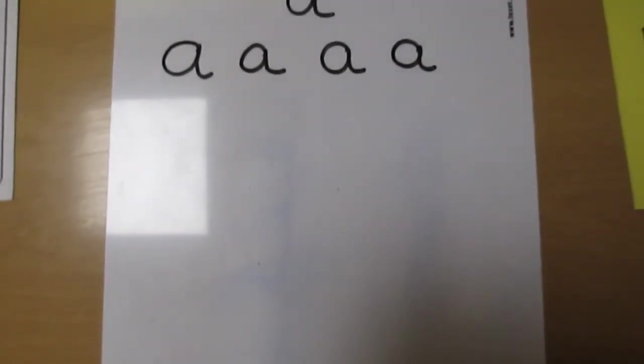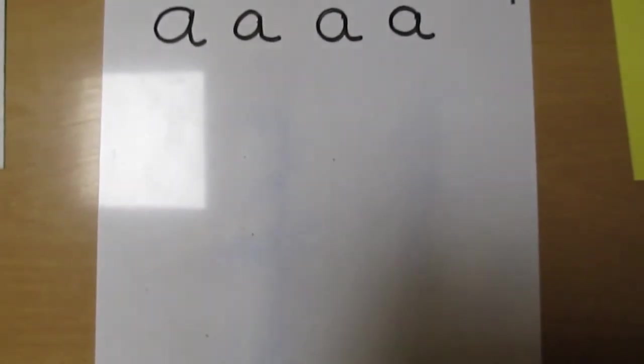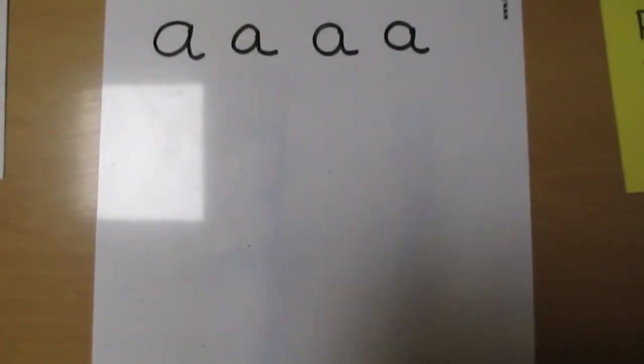The second word is 'pat'. P-a-t. Pat. Next, can you write the word 'sap'? S-a-p. Sap.